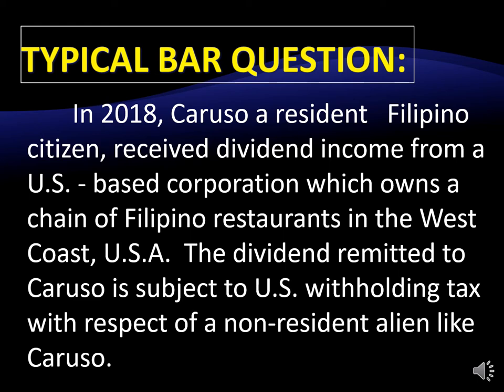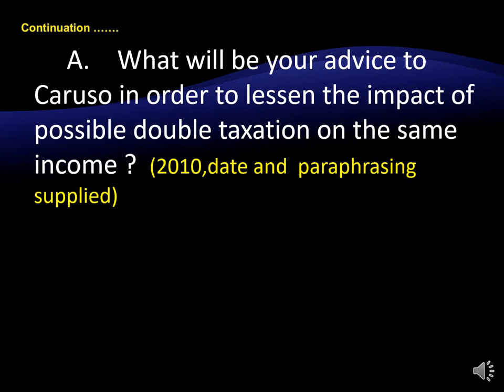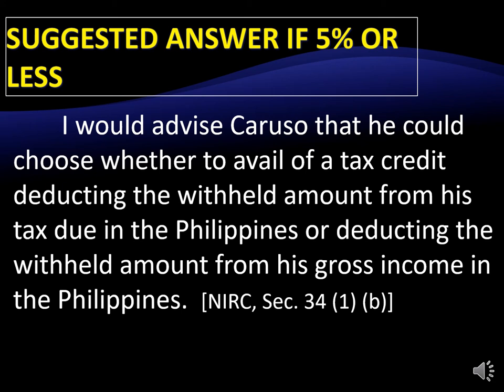The dividend remitted to Caruso is subject to U.S. withholding tax to the extent of a non-resident alien like Caruso. What will be the advice to Caruso in order to determine the impact of possible double taxation on the same income? What are the modes of reducing the impact of double taxation? If the weight is 5% or less, this is merely a one-sentence answer.